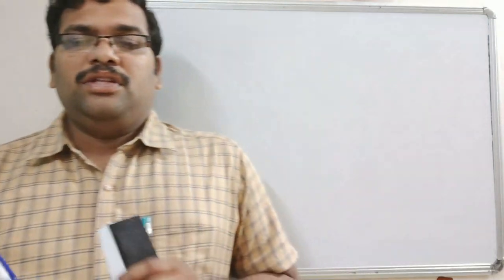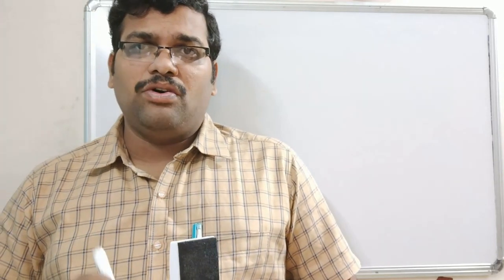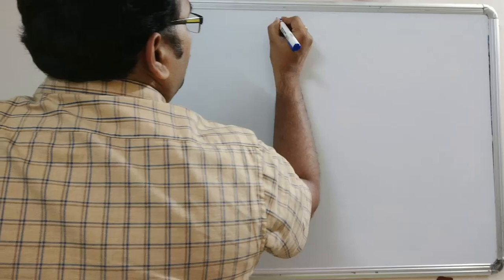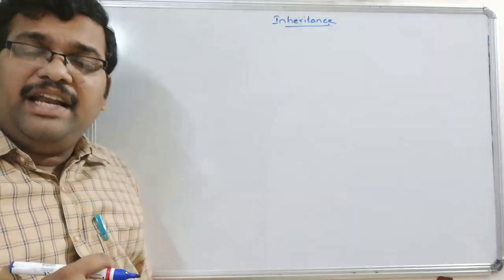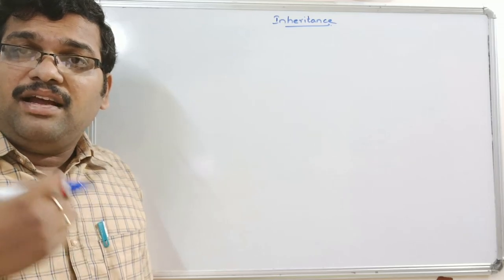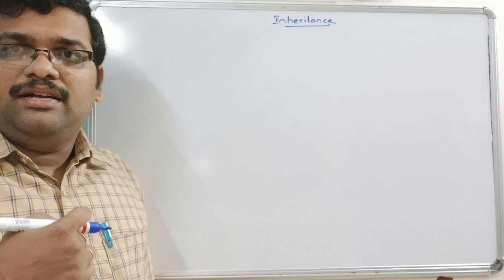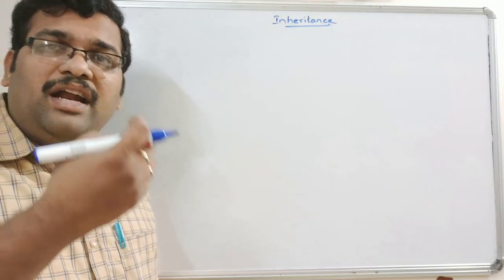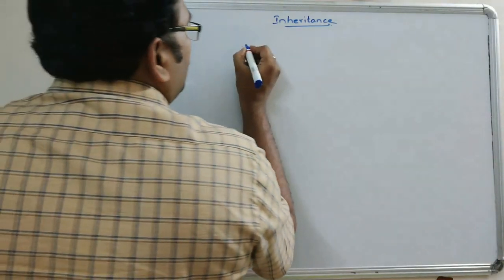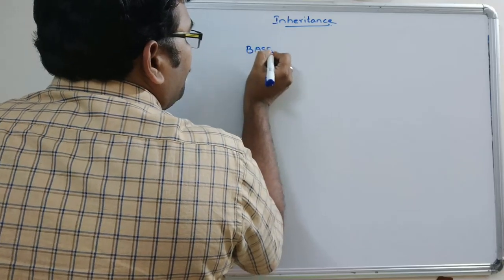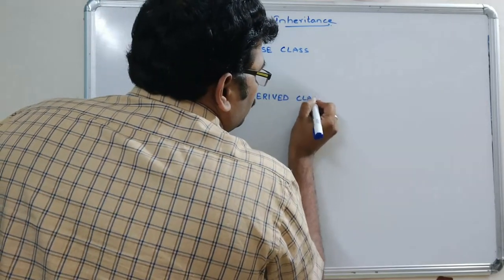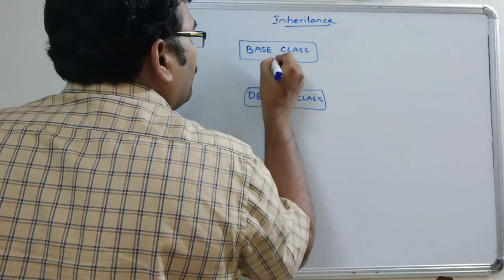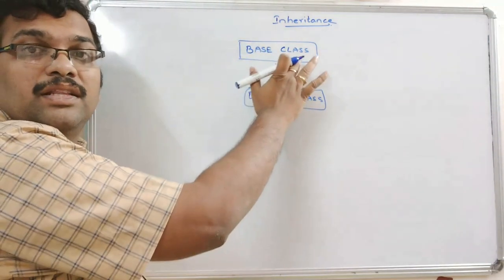Hello friends, welcome back to our channel. In the previous session we covered single inheritance. In this session we'll go with one more inheritance concept: multi-level inheritance. In single inheritance, there is one base class and one derived class, and the derived class acquires the properties from the base class.